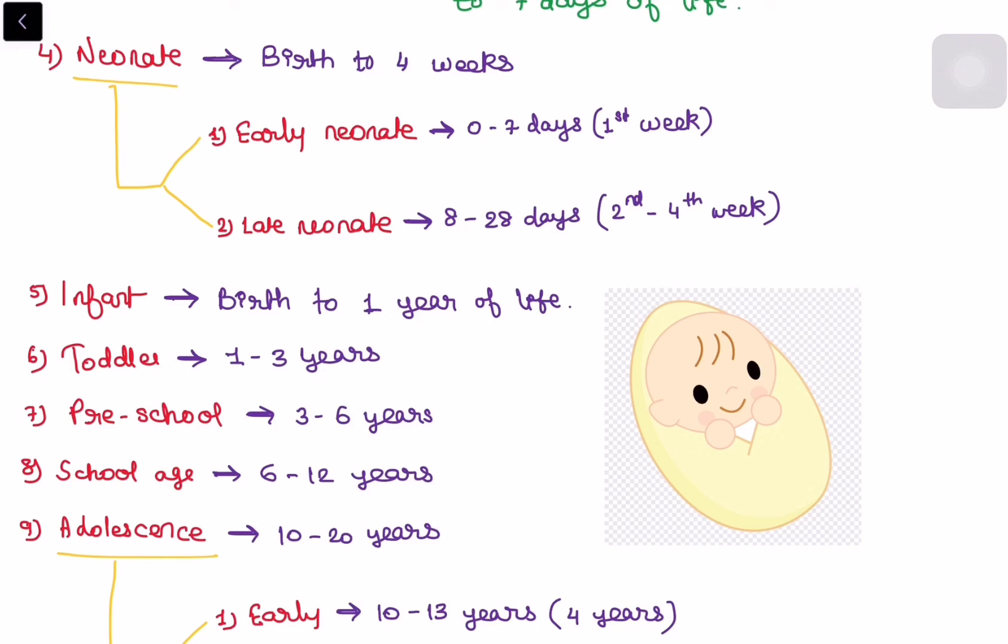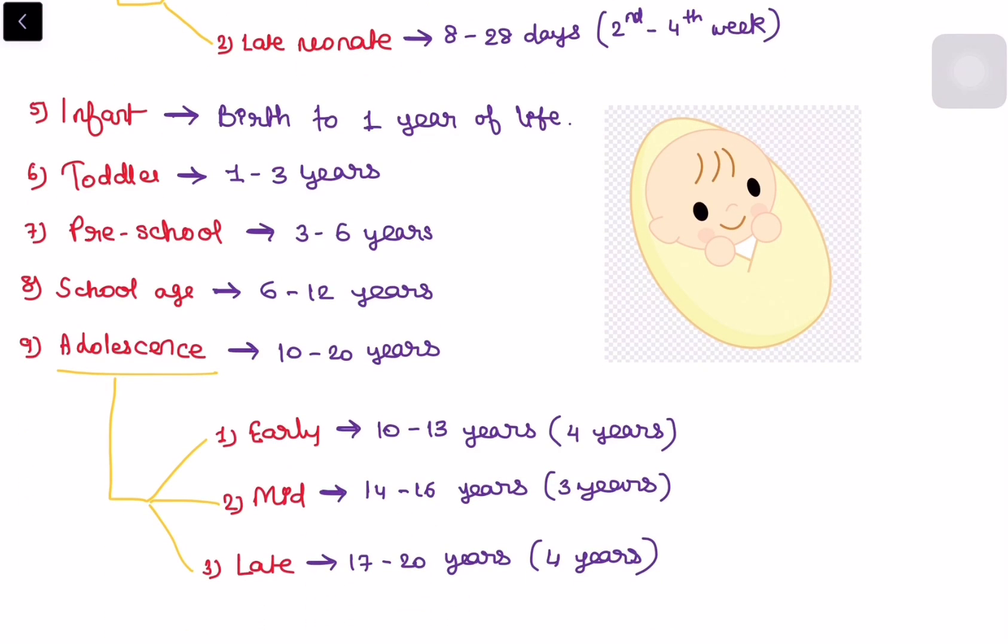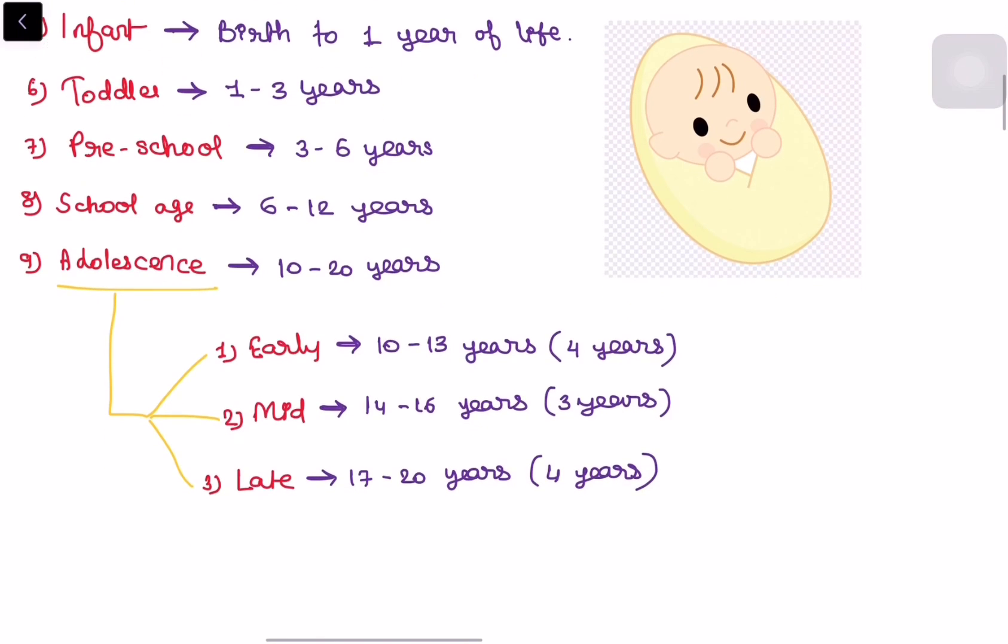Toddler, the sixth one toddler that is one to three years of life. Seventh one is preschool, preschool age is from three years to six years. Eighth one is school age that is six years to twelve years of life. And adolescence, that is ten years to twenty years of life but it is also subdivided into three categories early, mid and late adolescence. Early adolescence that is ten to thirteen years totally about four years. Mid adolescence that is fourteen to sixteen years that is three years and late adolescence that is seventeen to twenty years.